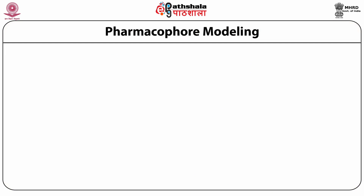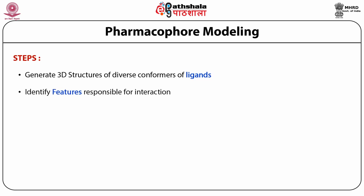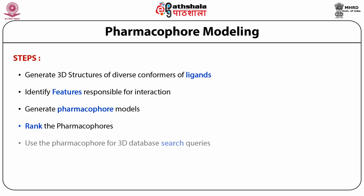Pharmacophore modeling has a few steps to follow. The first step is to generate 3D structures of diverse conformers from the ligands, then identify the features responsible for interaction. Then generate the full pharmacophore models, and after developing many of these models, rank them by fitting the active compounds. The pharmacophore can then be evaluated and used for 3D database searching.